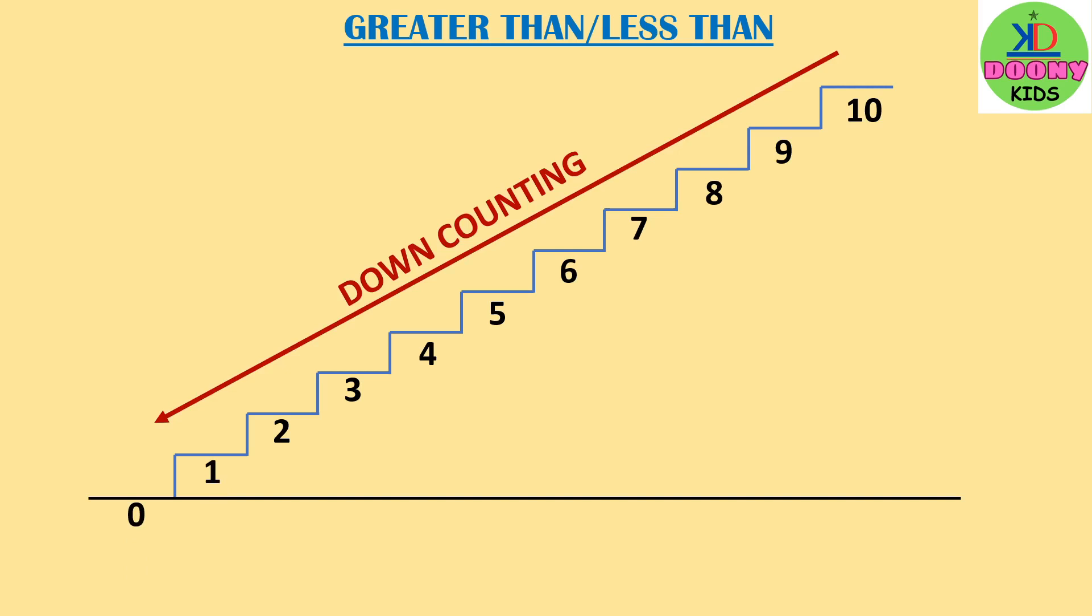We are counting here in reverse direction. From 10, 10, 9, 8, 7, 6, 5, 4, 3, 2, 1, 0. This is down counting.